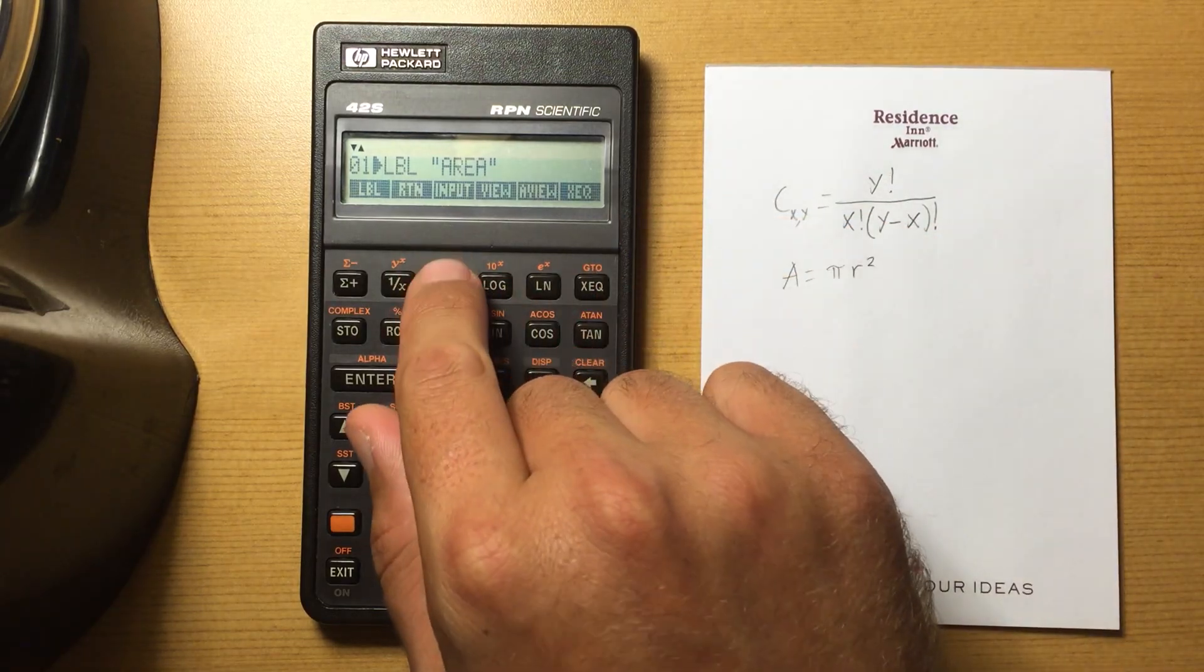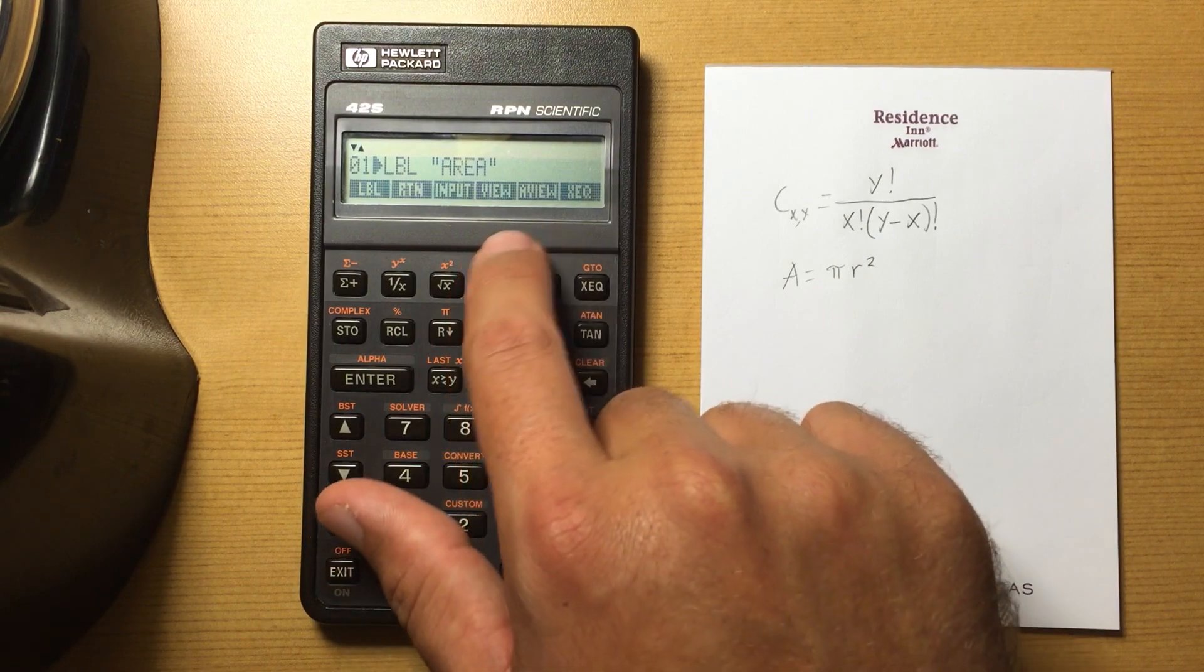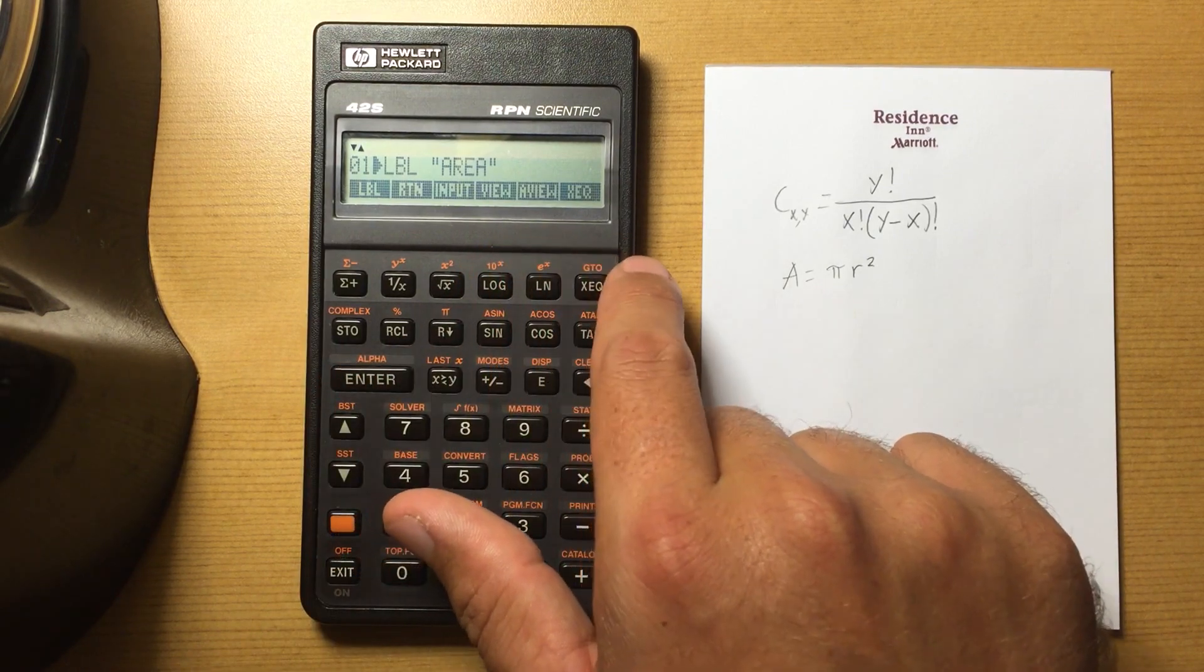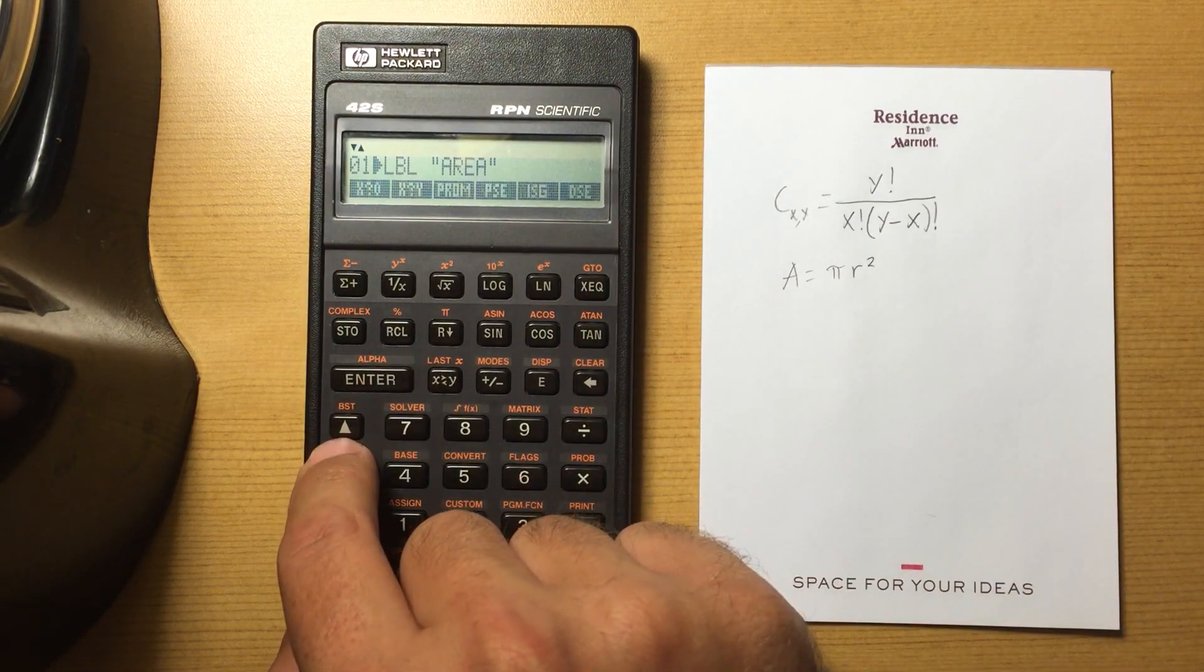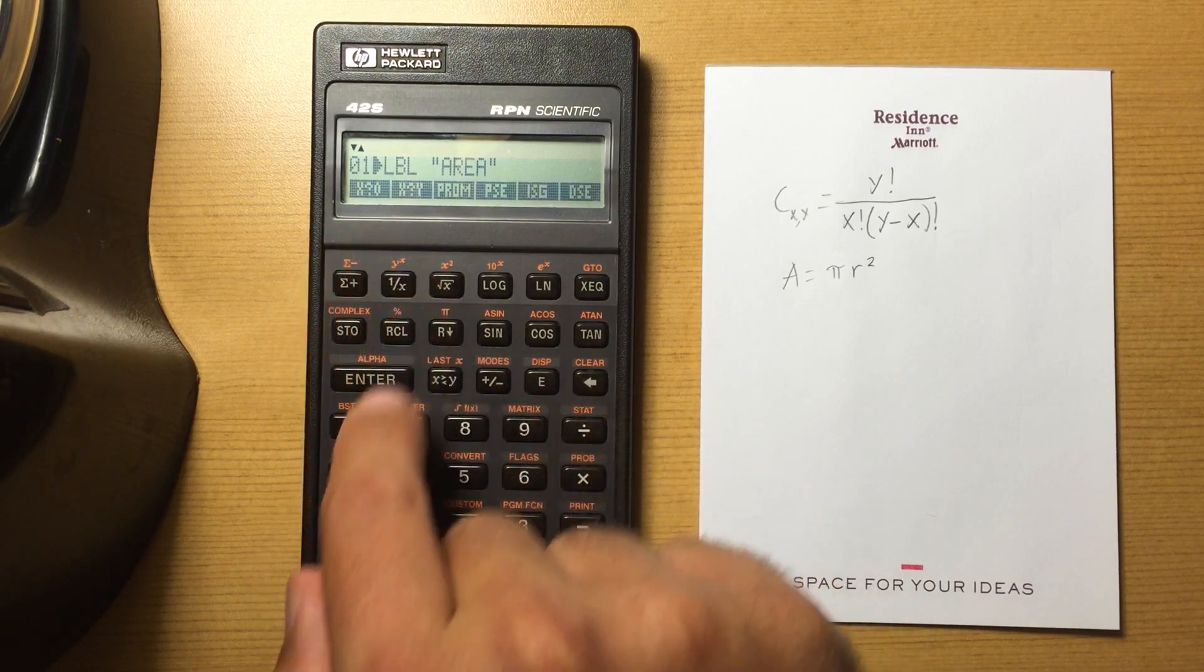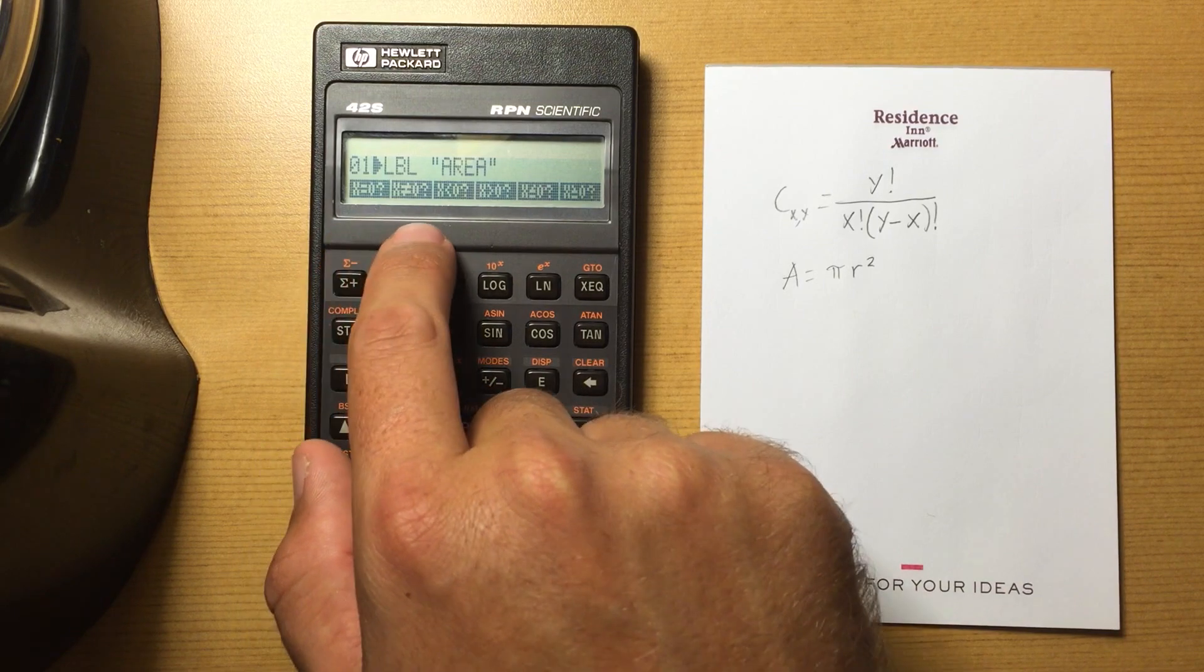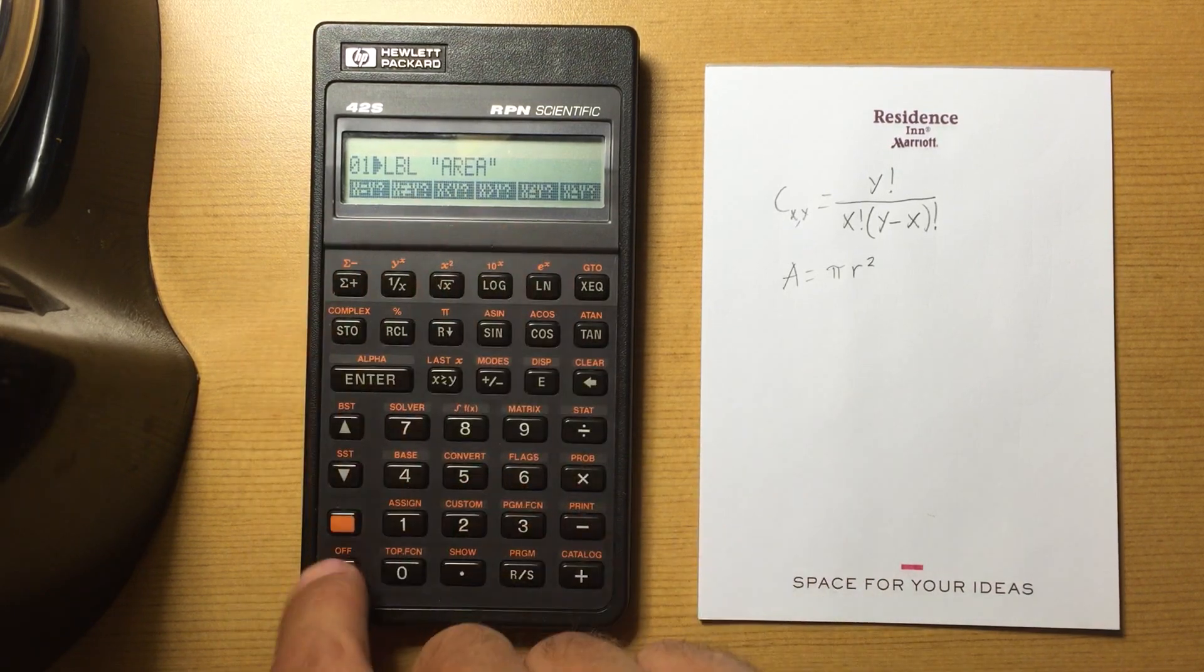you can return out of that subroutine. Request input, view variables, that's your alpha register view. You can execute a certain line, or execute a certain subroutine. Do x compared to 0 functions. So is x equal to 0, not equal, less than 0. Compare x and y.